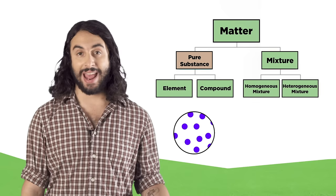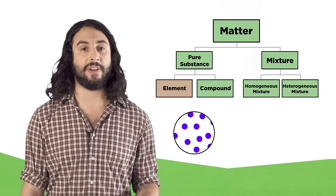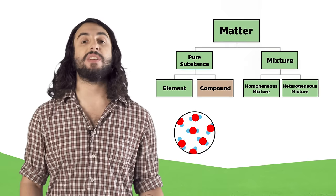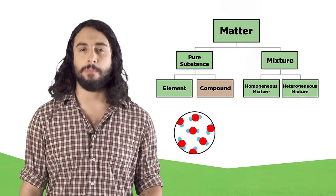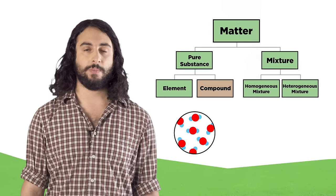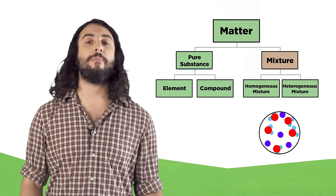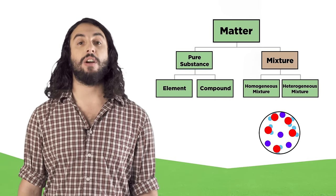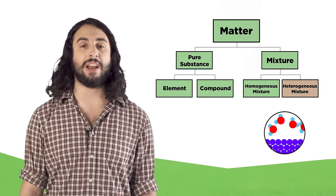So we've got pure substances, which can be elements made of only one type of atom, or compounds which are made of different types of atoms but are still just one type of molecule. Or we can have mixtures, which are made of multiple types of molecules and are arranged in either homogeneous or heterogeneous fashion.